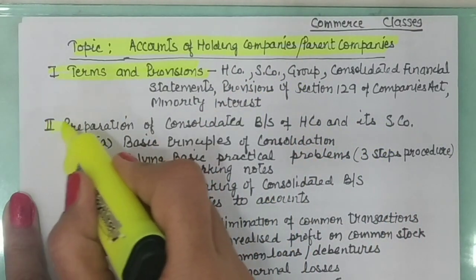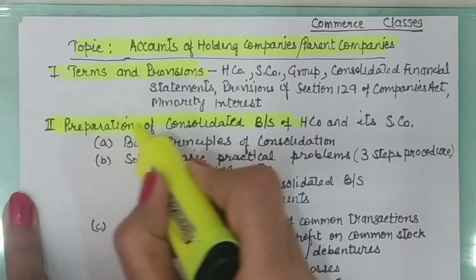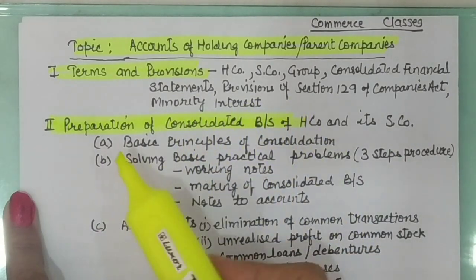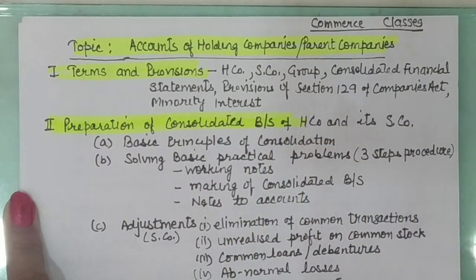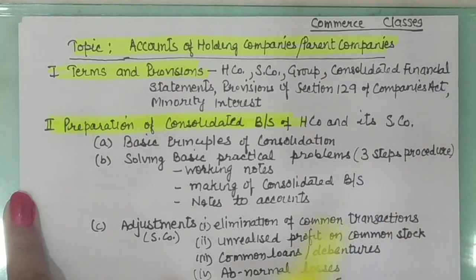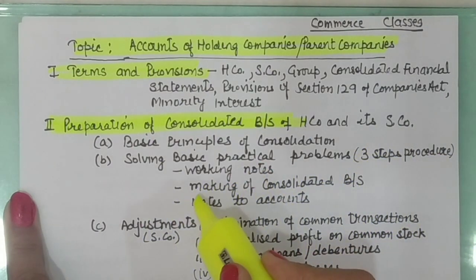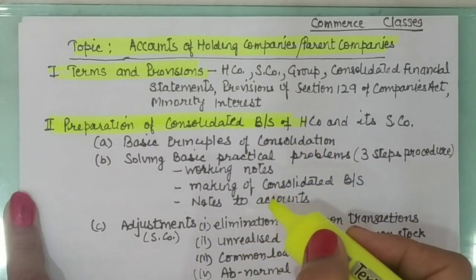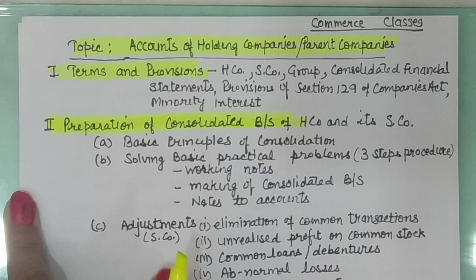The second part of this topic is preparation of the consolidated balance sheet of a holding company and its subsidiary company. This is the practical part of the chapter. A practical question involves three steps: procedure, working notes, making of the balance sheet, and notes to accounts. First we study basic principles of consolidation to prepare a consolidated statement in simple terms.